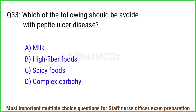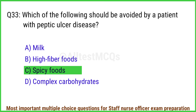Q33. Which of the following should be avoided by a patient with peptic ulcer disease? The correct answer is option C: Spicy foods.